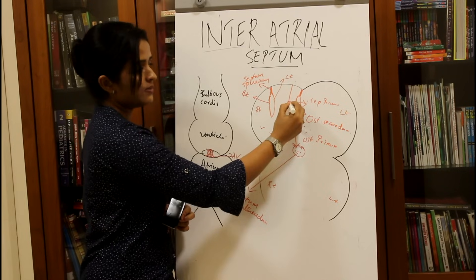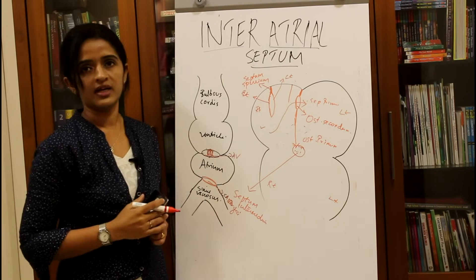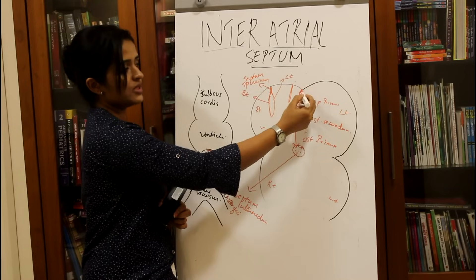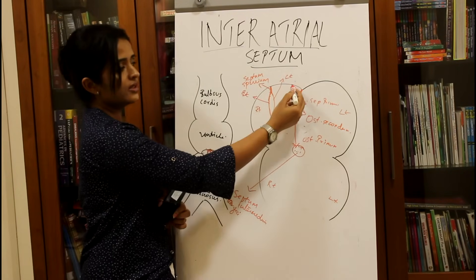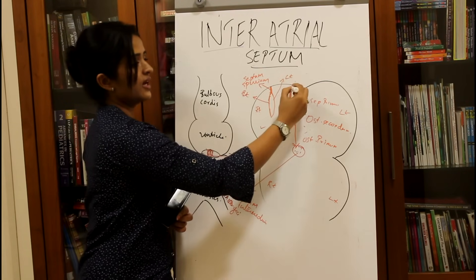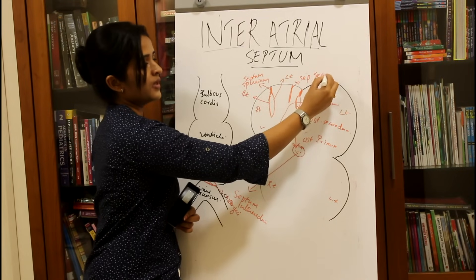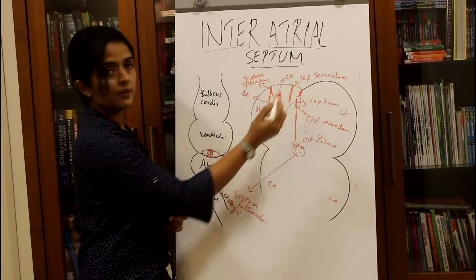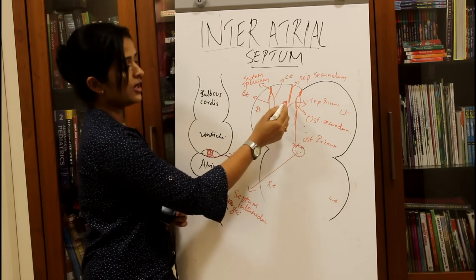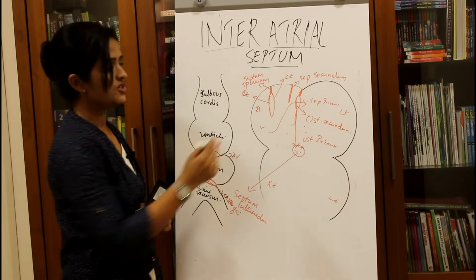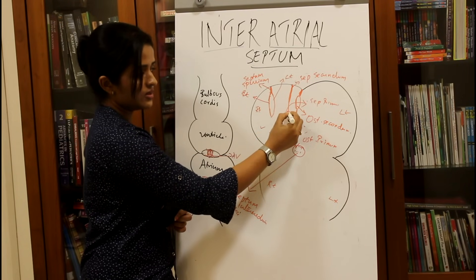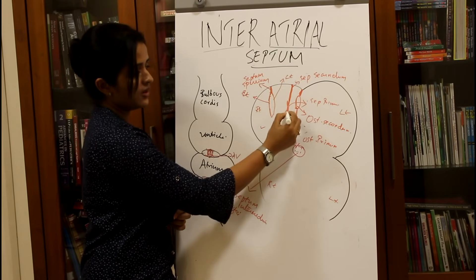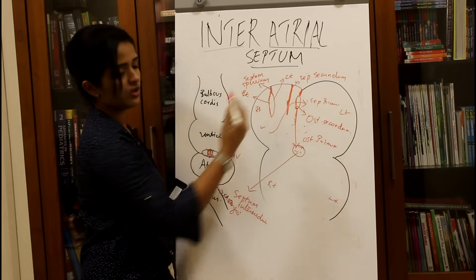After the formation of ostium secundum, another septum arises from the roof of the atrium, more towards the right side of the septum primum. This is the second formed septum, so it is named the septum secundum. The septum secundum gradually moves downwards, but unlike septum primum, it does not try to meet the septum intermedium — it just grows downward until it crosses the lower limit of the ostium secundum.